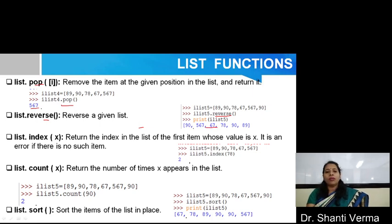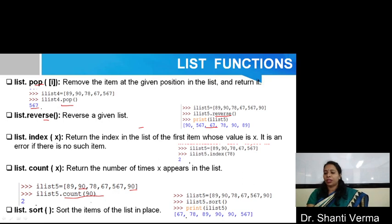There is also a function count. Basically, count returns the number of times x appears in the list. For example, you can see that here 90 occurs two times in a list. So if I write ilist5.count(90), it returns the frequency of 90, that is two. You can also sort the items of the list using the sort function.